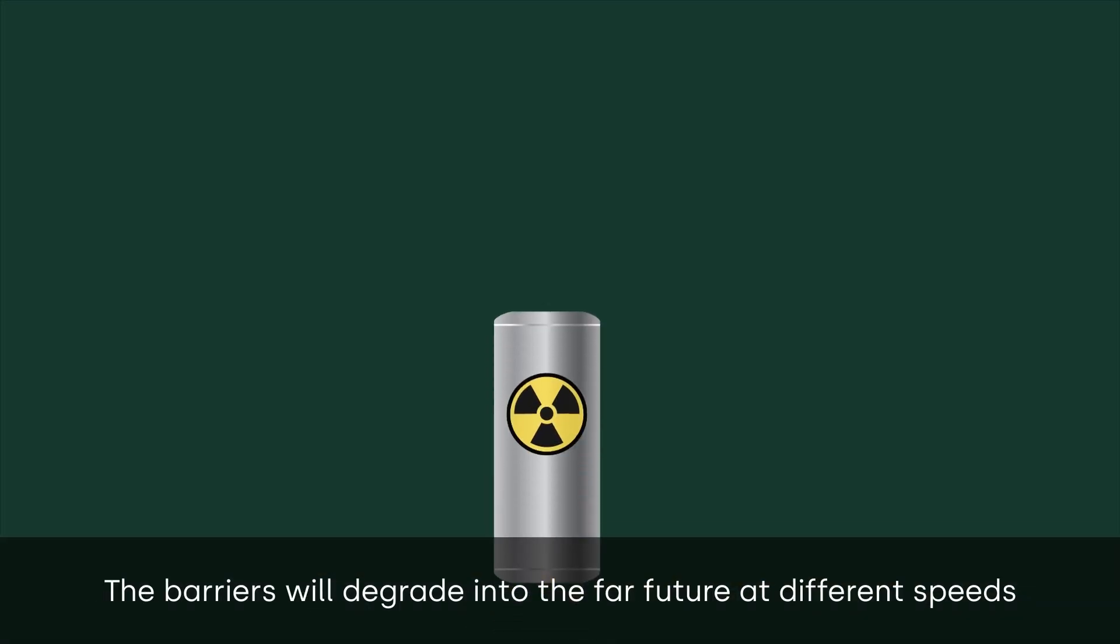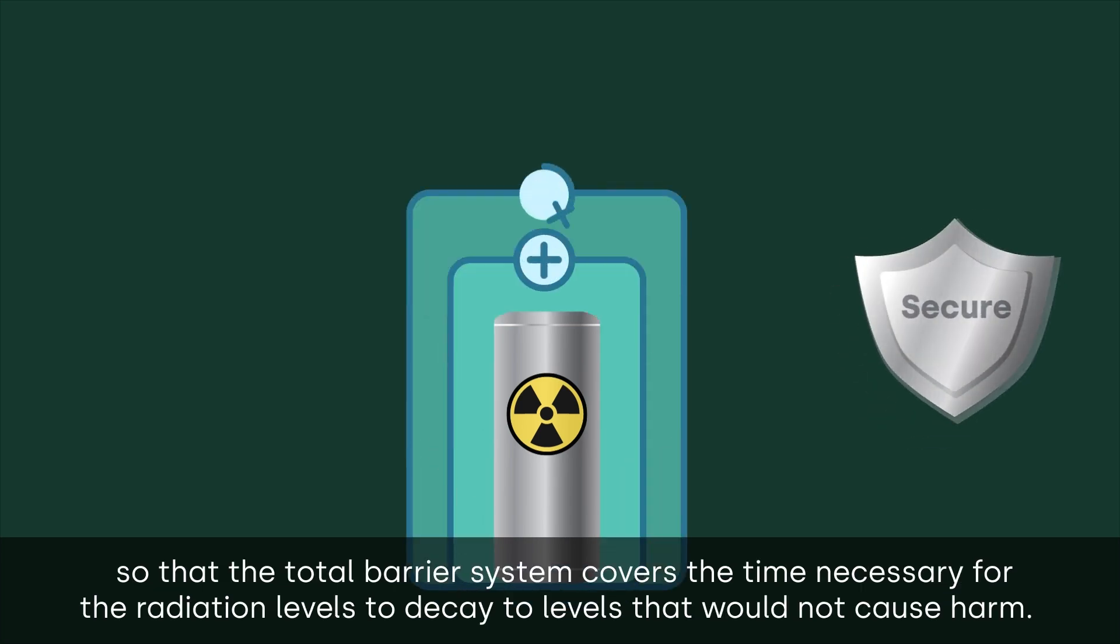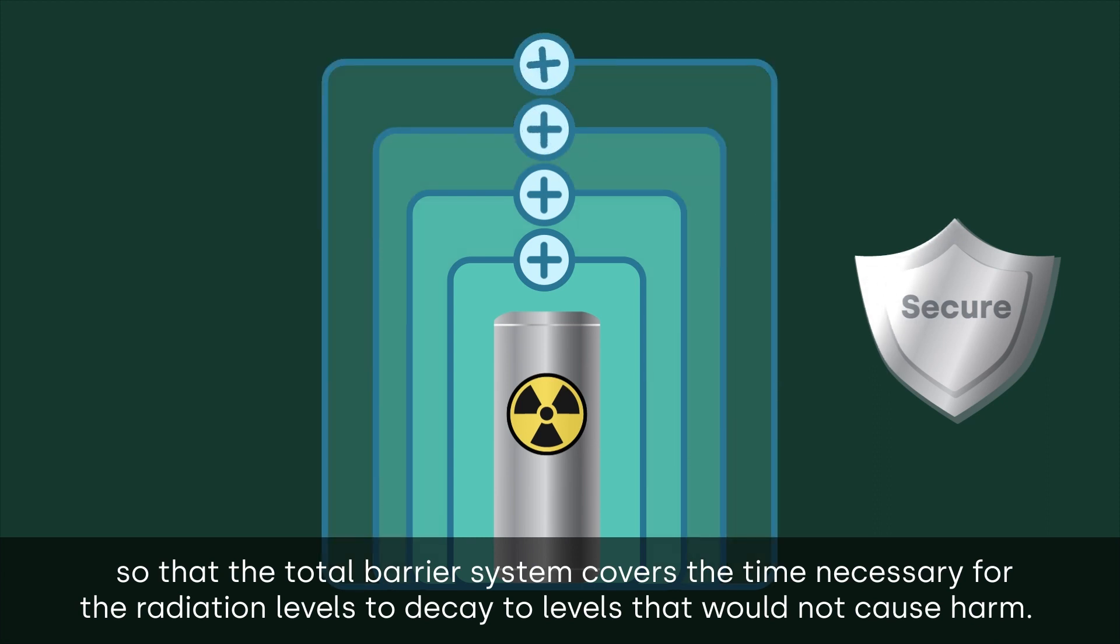The barriers will degrade into the far future at different speeds, so that the total barrier system covers the time necessary for the radiation levels to decay to levels that would not cause harm.